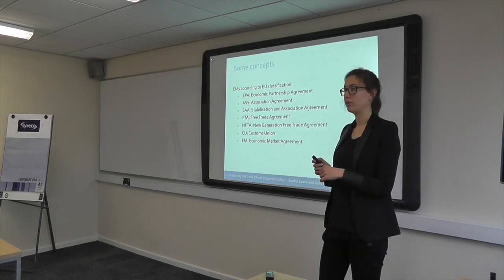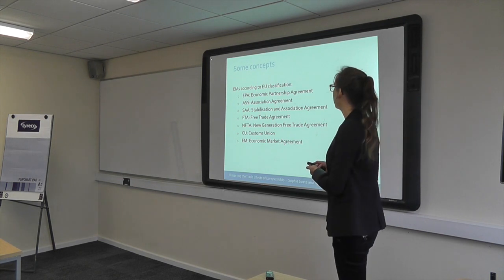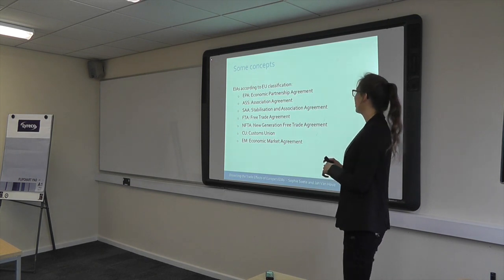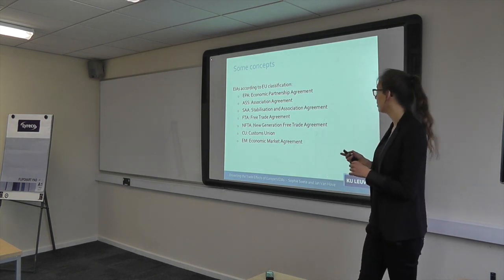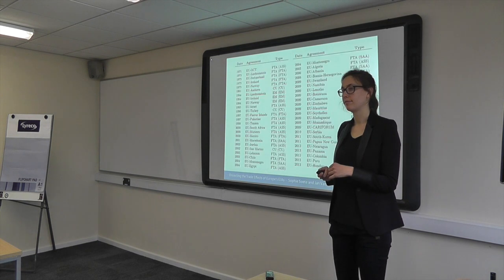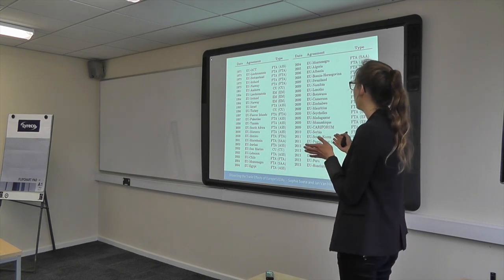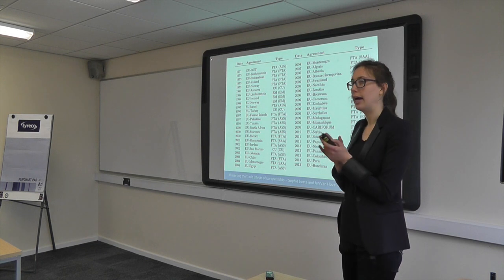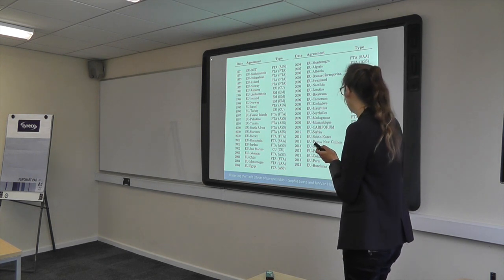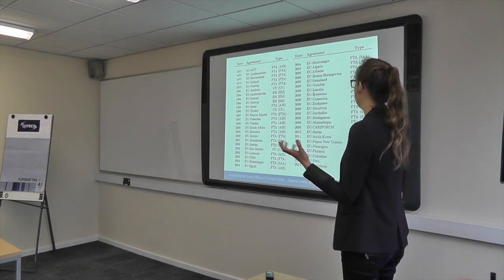There's another classification based on the names Europe gives to its trade agreements. We distinguish between economic partnership agreements, association agreements, stabilization and association agreements, free trade agreements, new generation free trade agreements, customs unions, and economic market agreements. The table shows all agreements between Europe and the rest of the world, with the date each entered into force, and the two classifications I use. As you can see, from the early 90s on it really has exploded.